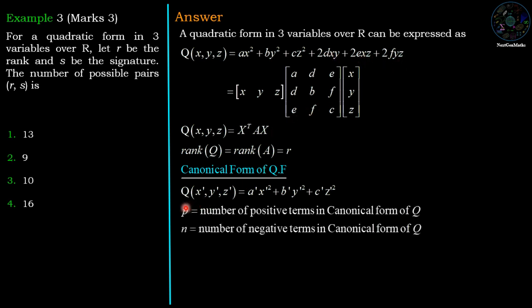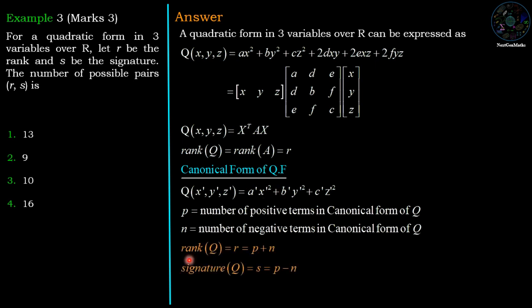Here p represents the number of positive terms in the canonical form of the quadratic form, and n represents the number of negative terms. Based on these two numbers we define: rank R = p + n, and signature S = p − n. These basic definitions are required to solve this example.